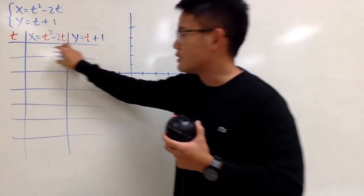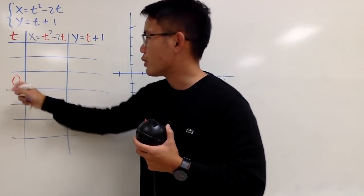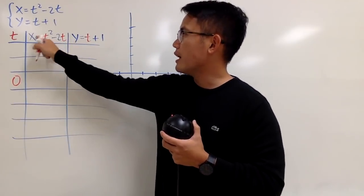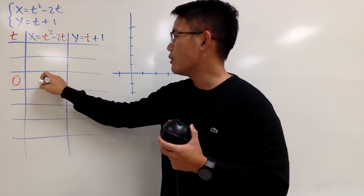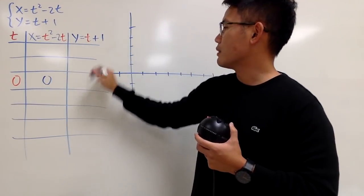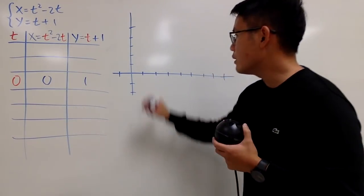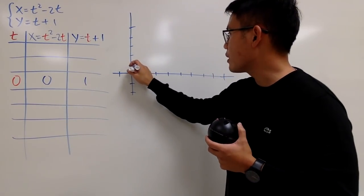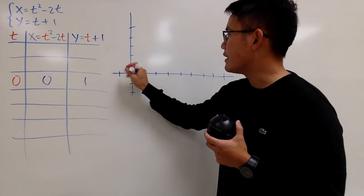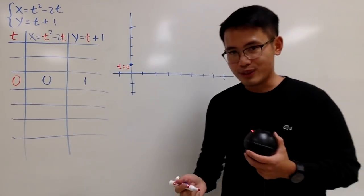I'm going to save two spaces here and start with t equals 0. If you plug in 0 into x and y, you get x is equal to just 0. Plug in 0 into y, you get 1. So the first point is (0, 1), right here. I'll put a point here and indicate that this is when t equals 0.